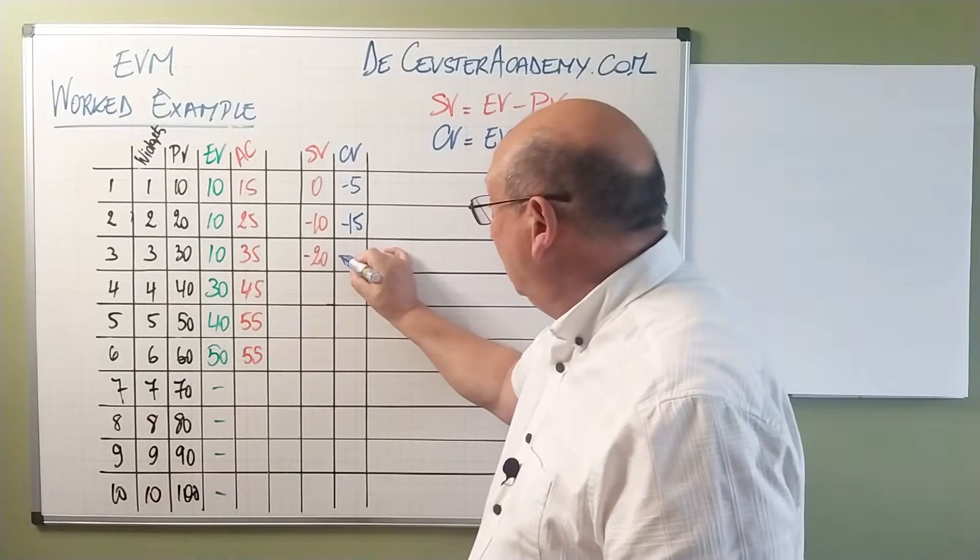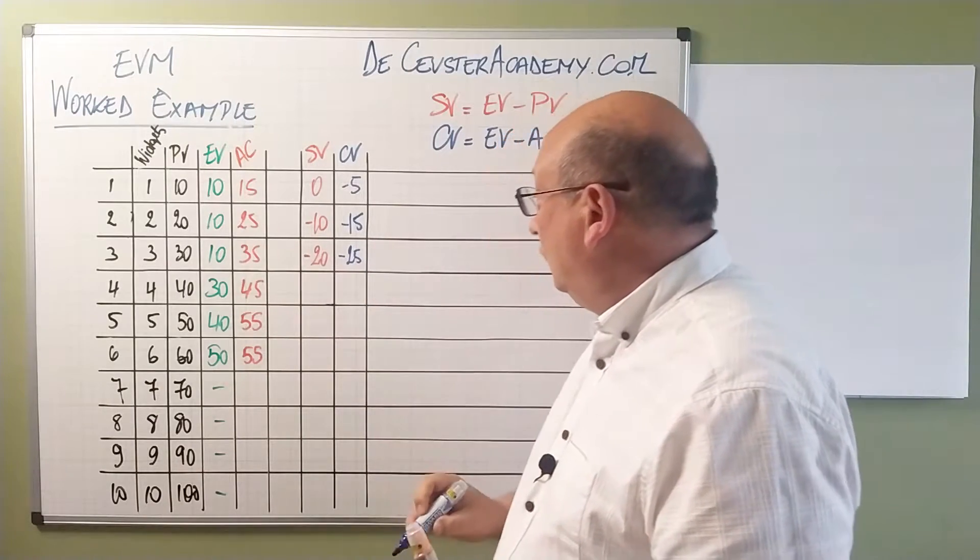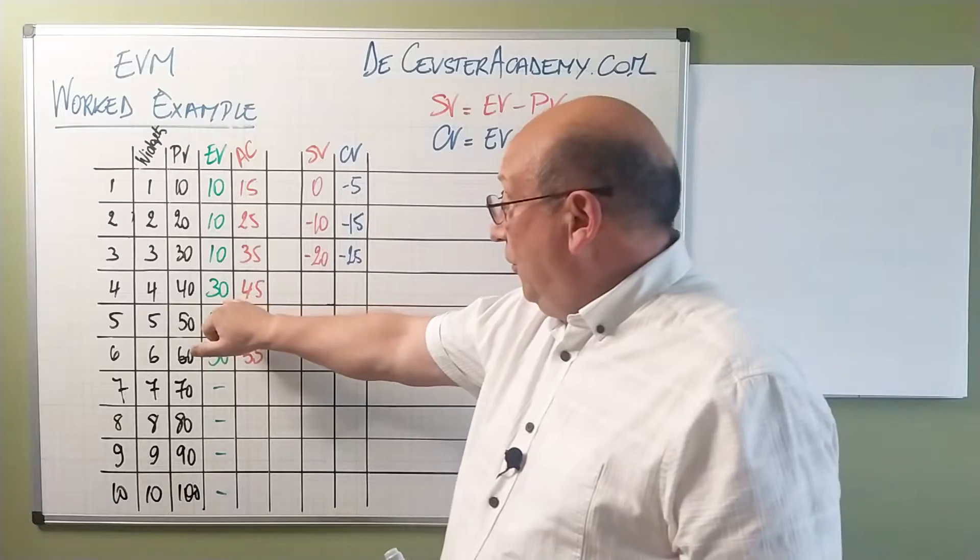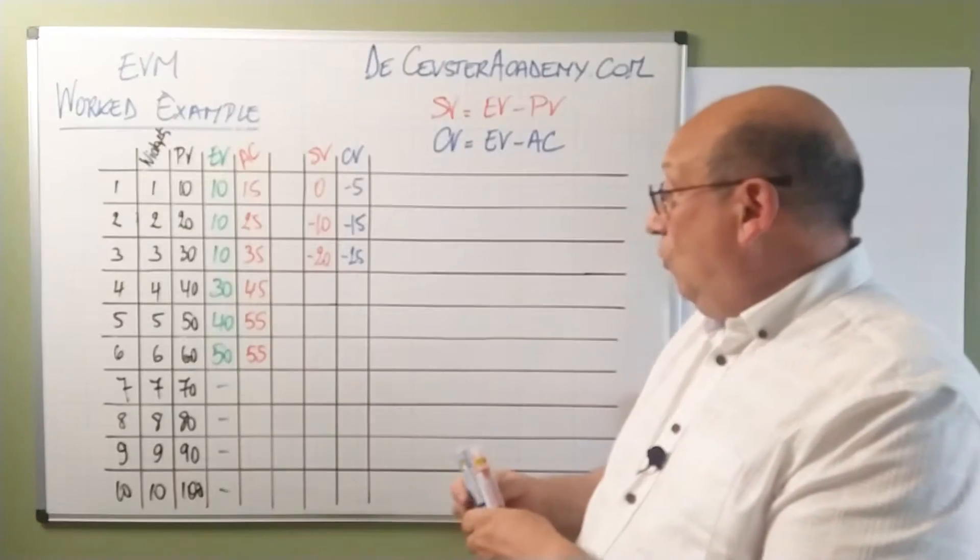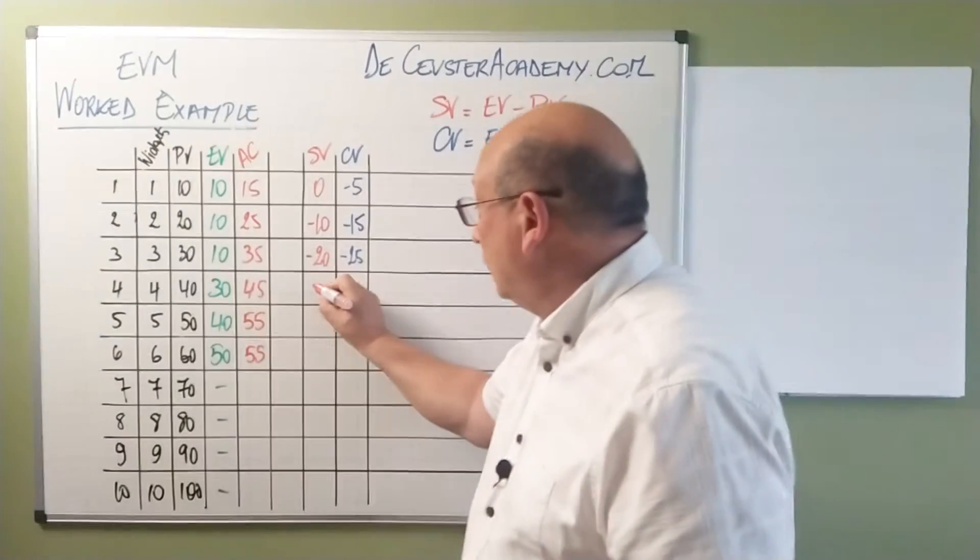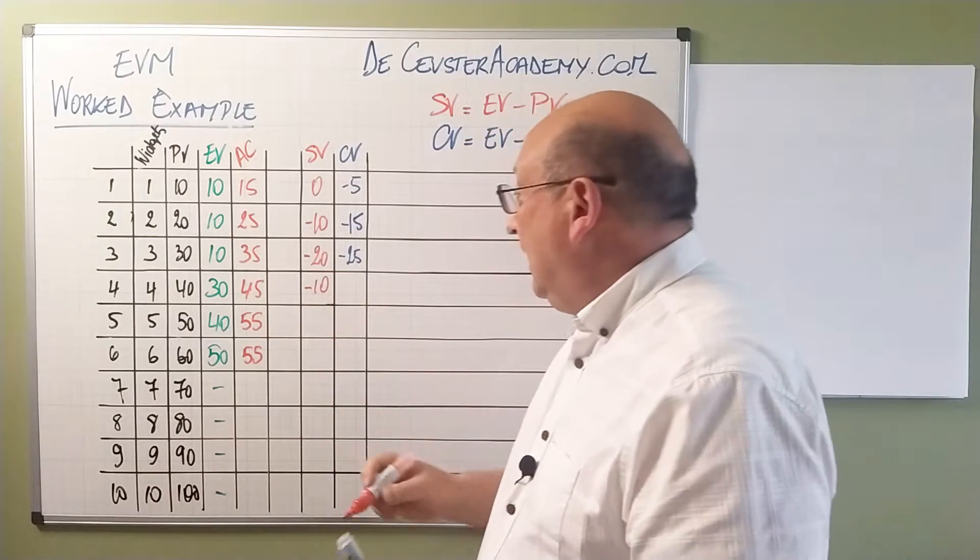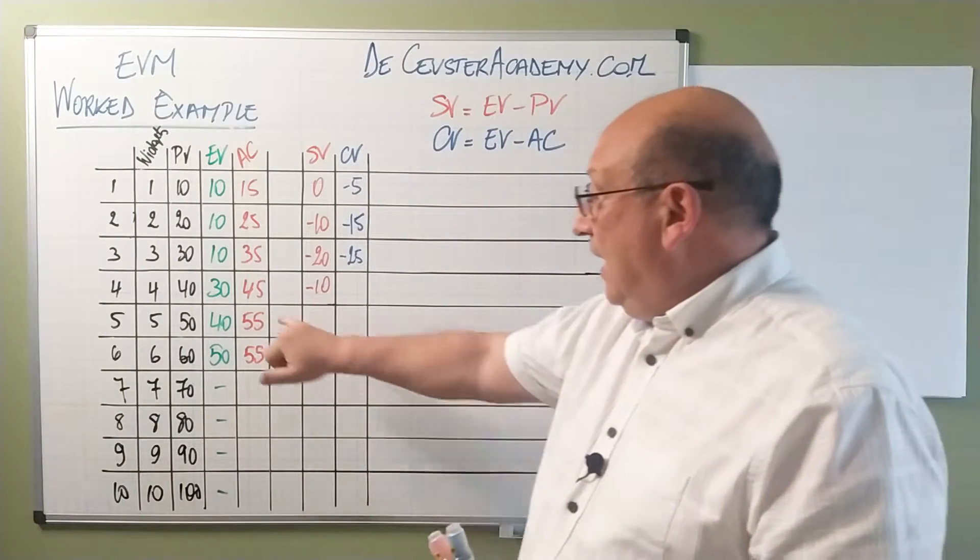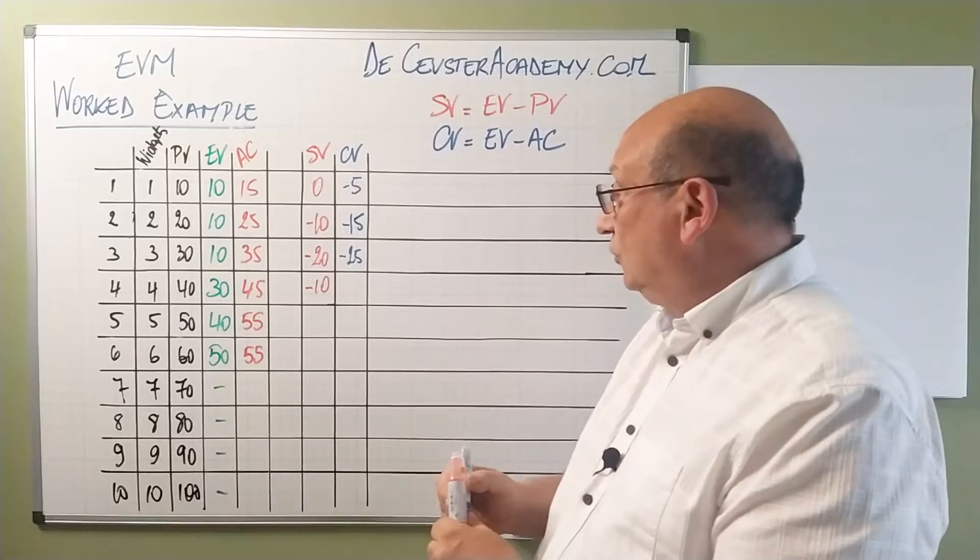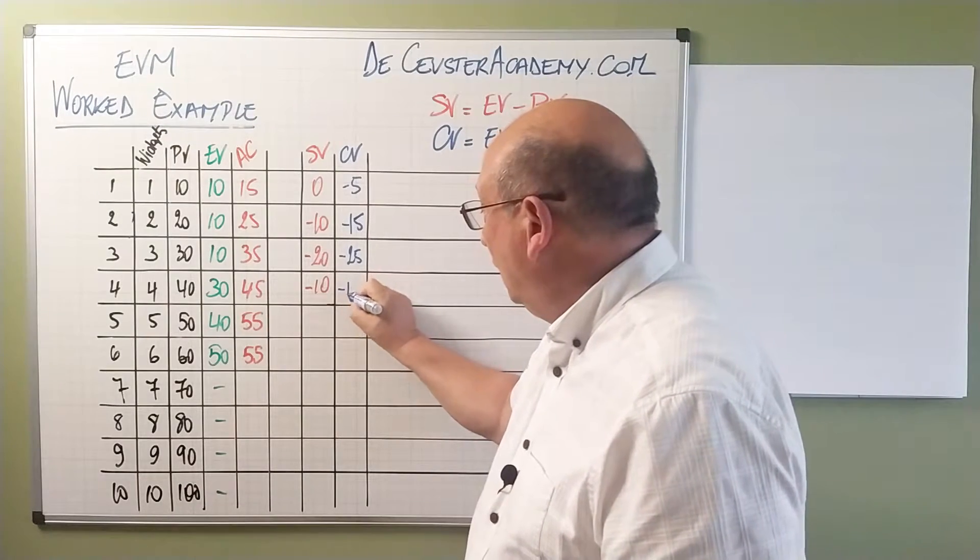So minus 25 is the value for here. Now we have 30 and 40 so we only have a schedule variance of minus 10 here. I made some time up and I have a cost variance of minus 15.